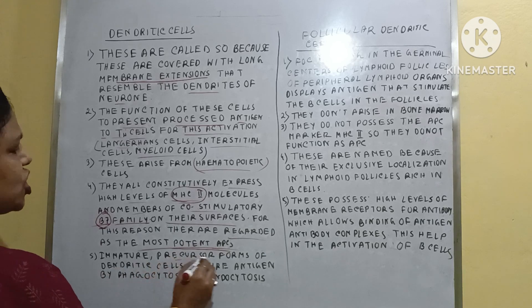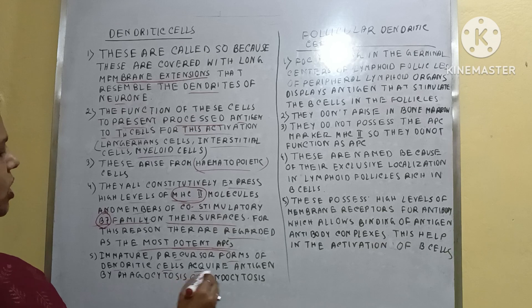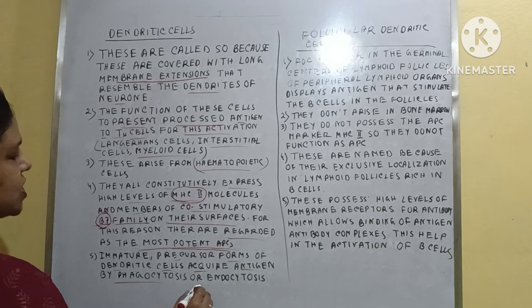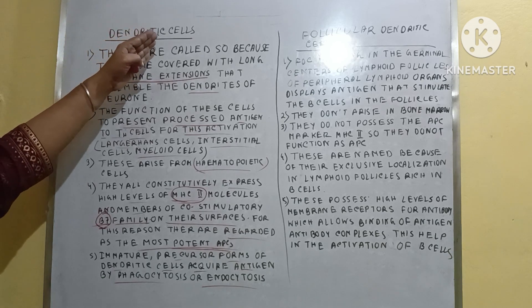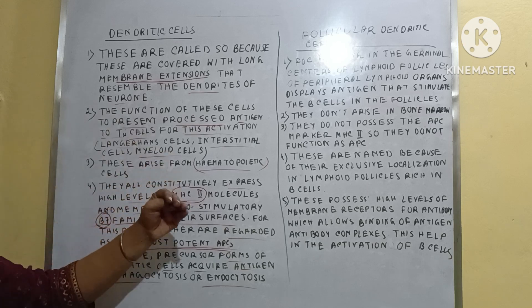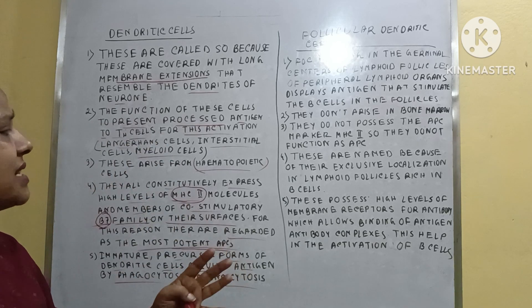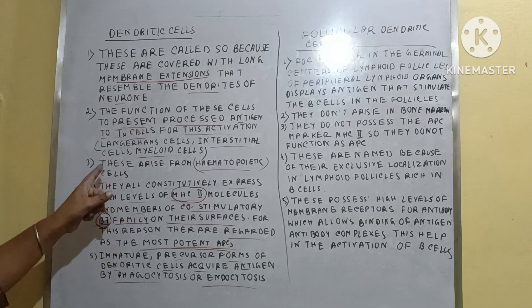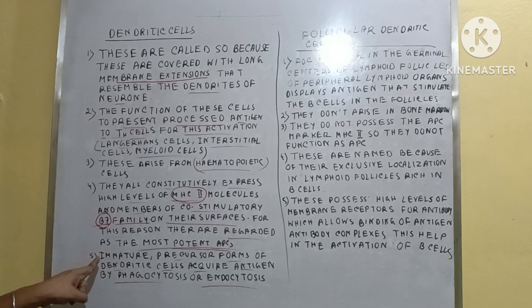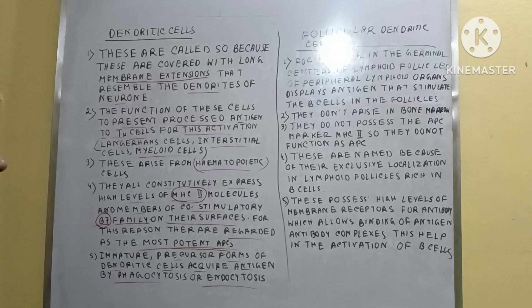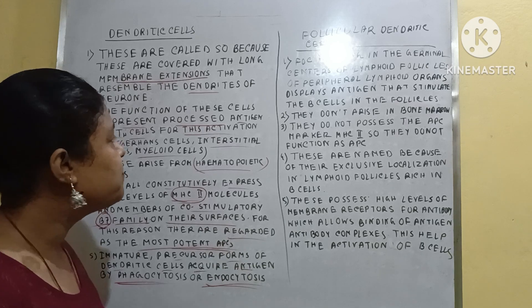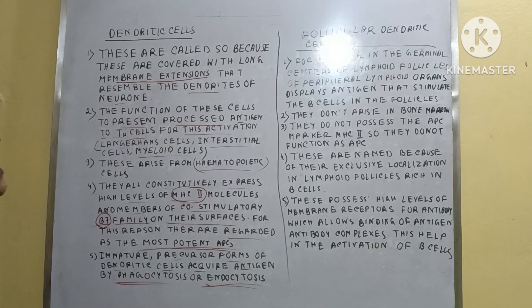Immature precursor forms of the dendritic cells acquire antigen by phagocytosis or endocytosis. The mature dendritic cells generally present the antigens in the binding form of MHC 2 complex towards the TH cells. But in case of immature dendritic cells, they are capable of consuming the antigens by the endocytosis process or the phagocytosis process. These are the features of the dendritic cells.